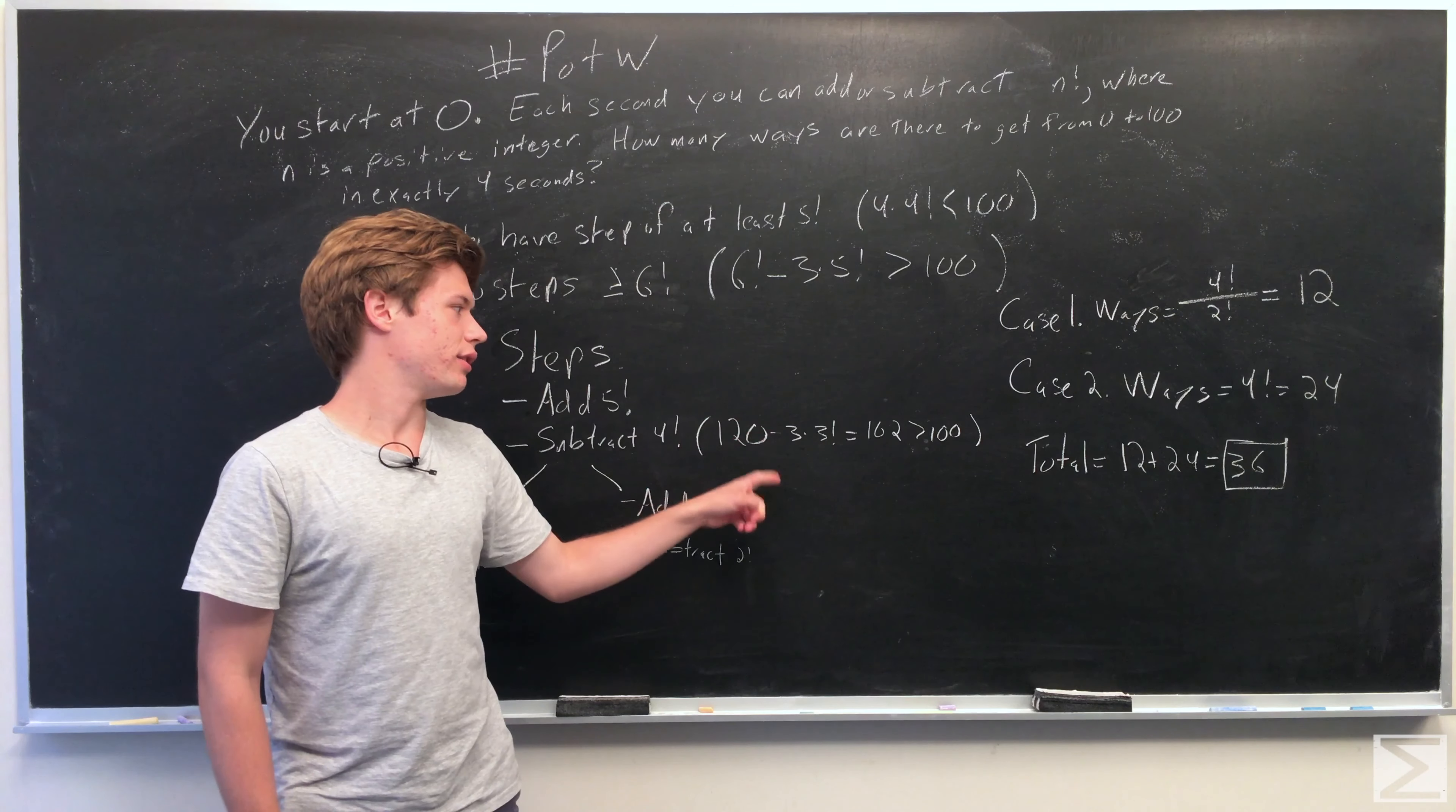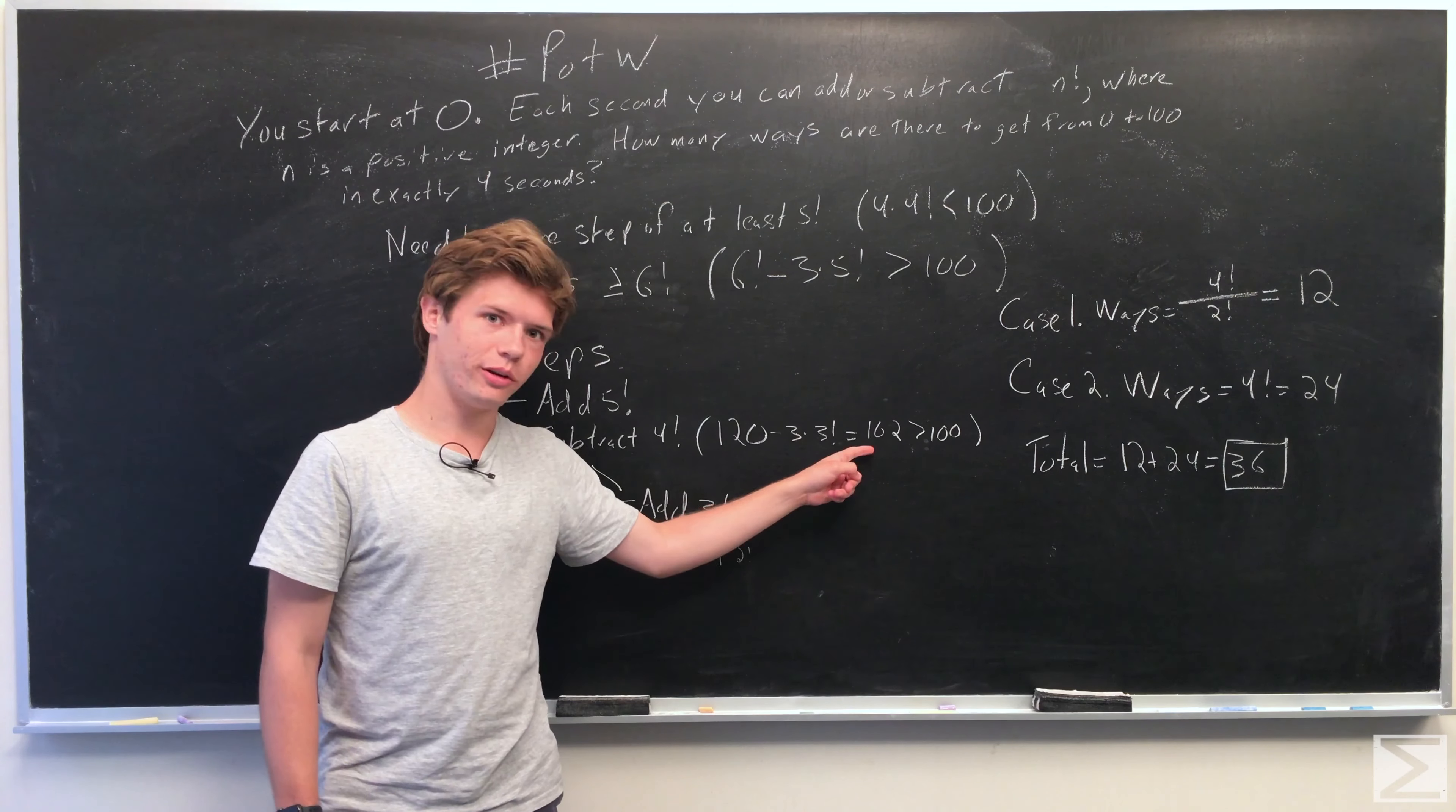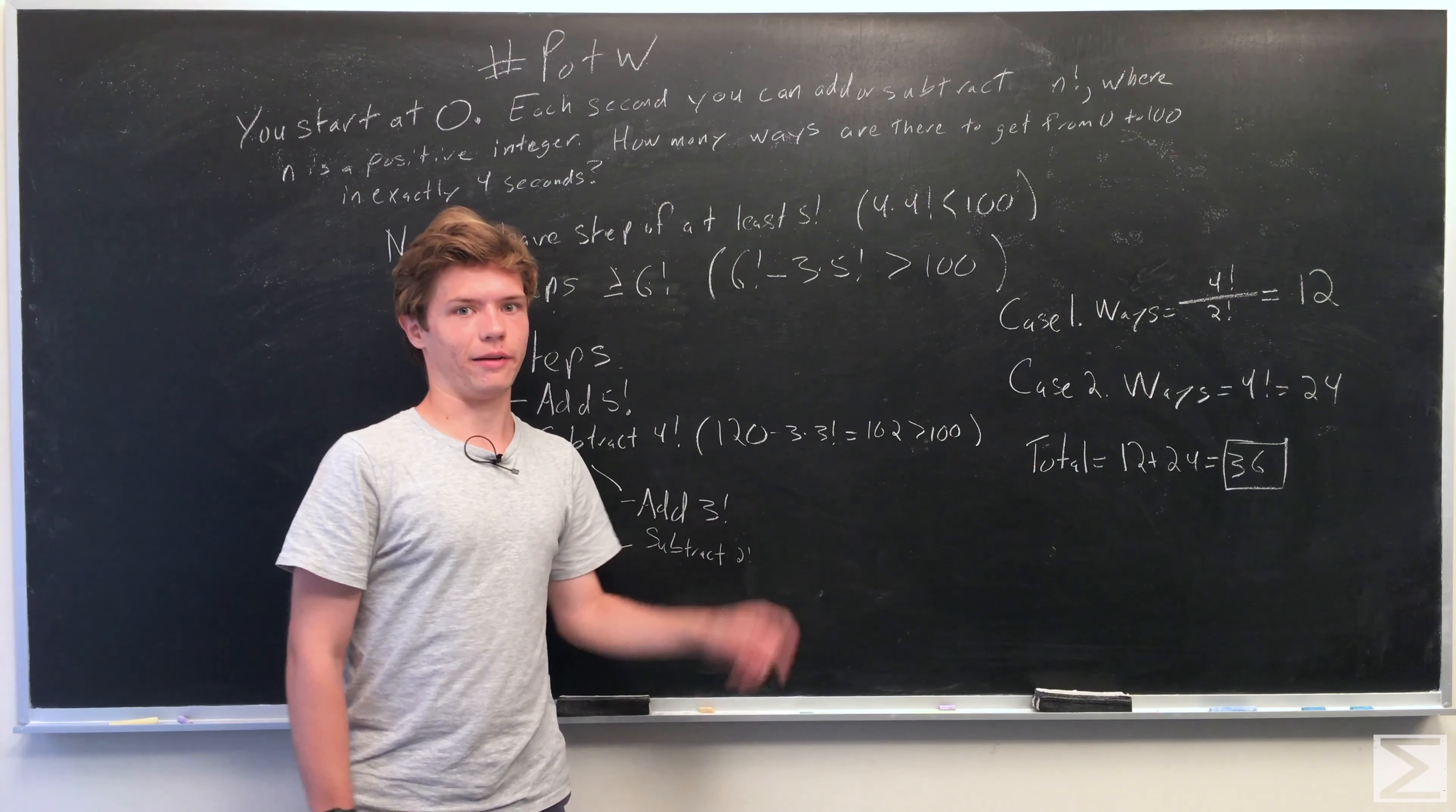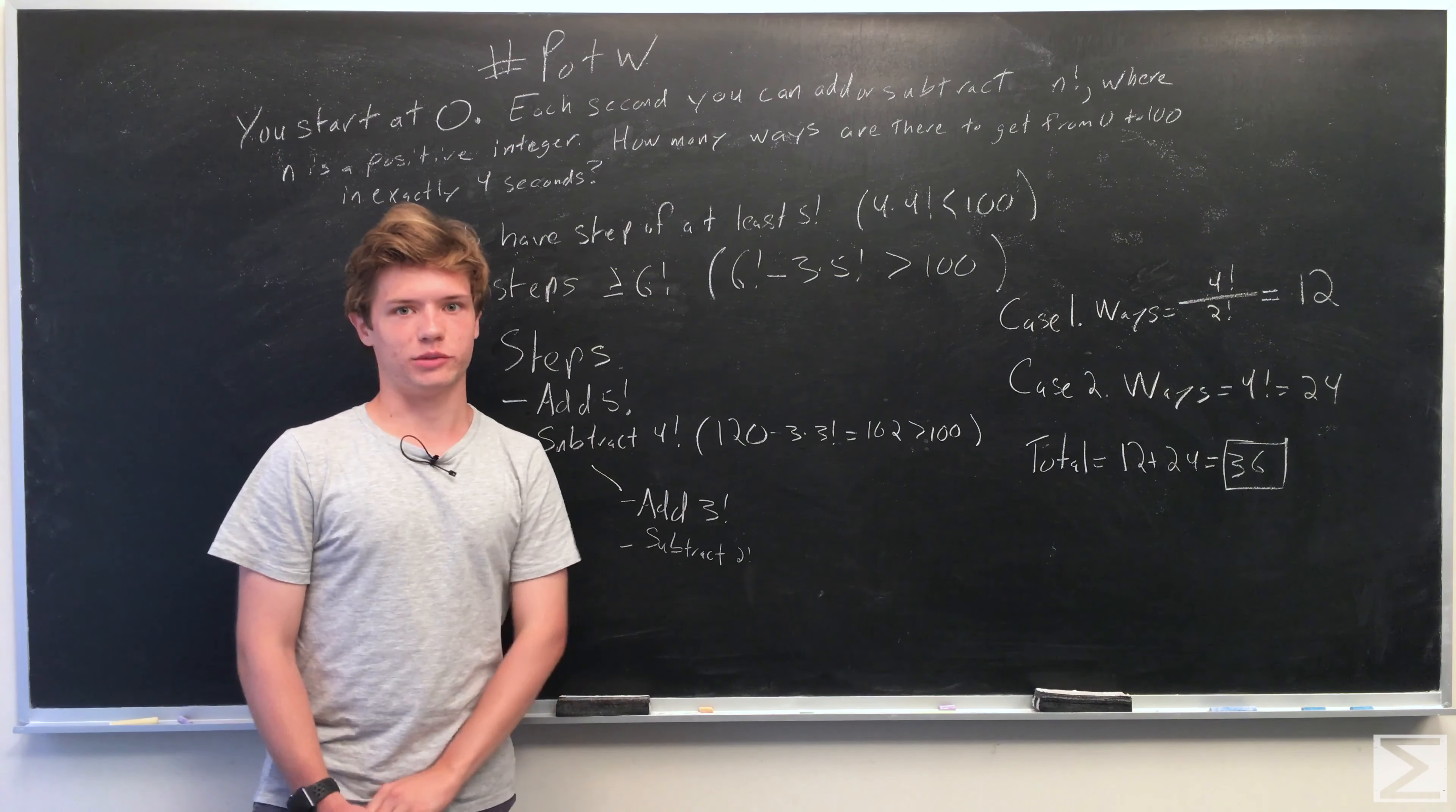...and 120 minus 3 times 3 factorial equals 102, and that's greater than 100, so we won't have enough steps unless we subtract 4 factorial as a step.